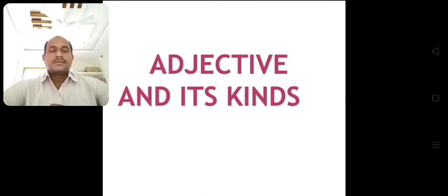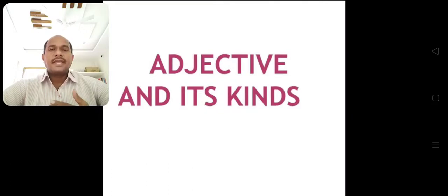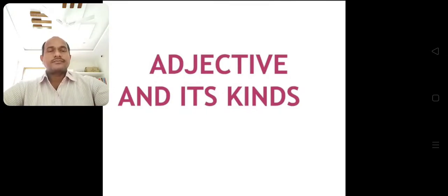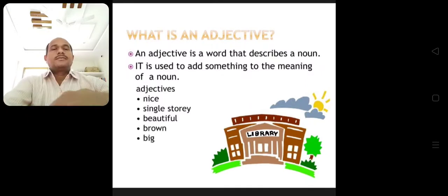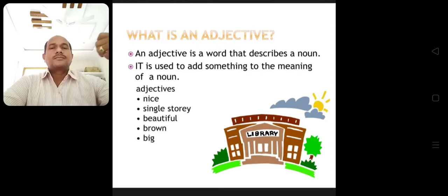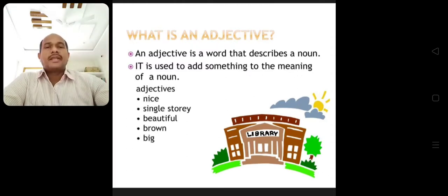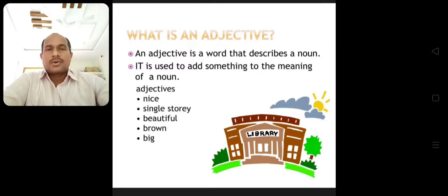An adjective indicates the number. An adjective says something more about a noun or a pronoun. An adjective is a word that describes a noun or a pronoun. It is used to add something to the meaning of a noun.